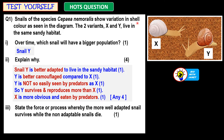Notice here: one tip is that we are making a comparison between X and Y. So we must use comparison words like 'better adapted', 'better camouflaged', 'not so easily seen'. We are comparing X and Y all the time. Also, 'reproduces more' and 'X is more obvious'.